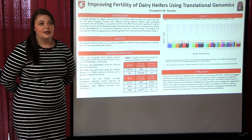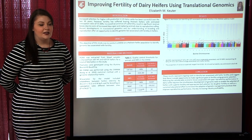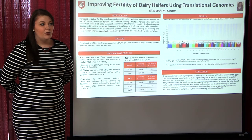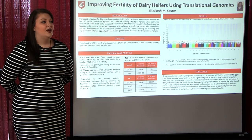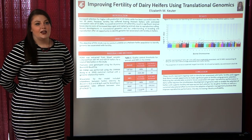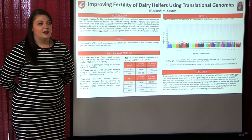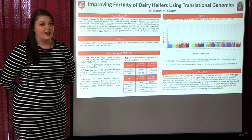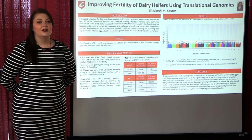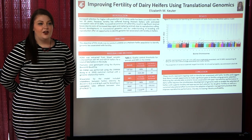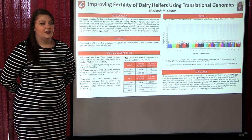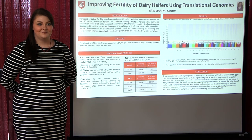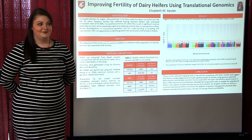Additionally, we estimated heritability of conception rate to be 46%, which is a high heritability estimate and suggests that significant gains can be made using genetic selection. This would save the producer that $500 per failed pregnancy per animal, thus increasing industry profitability. Thank you.